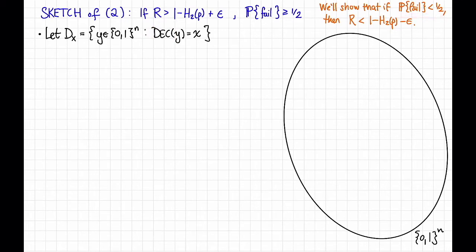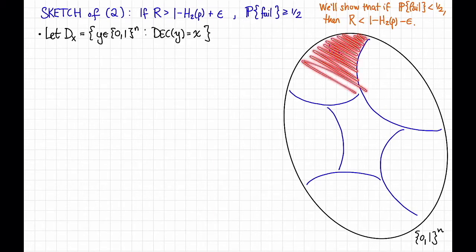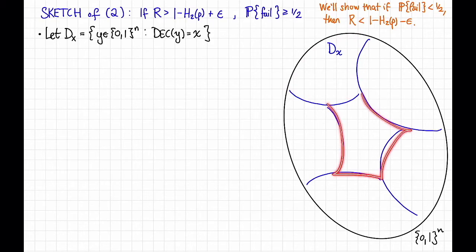So that's going to chop up our space into a bunch of different regions. Let's say they look like that. That is, all of the points in here—if Bob sees any of these points, he's going to say, okay, Alice meant to send x. Whereas if Bob sees any of these points, he might say, okay, Alice meant to send some other x prime, and so on.